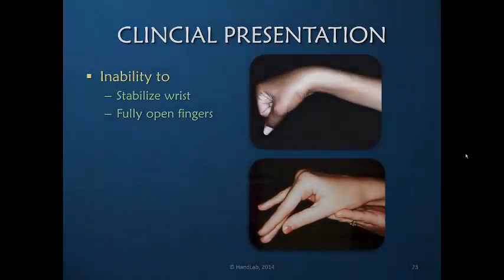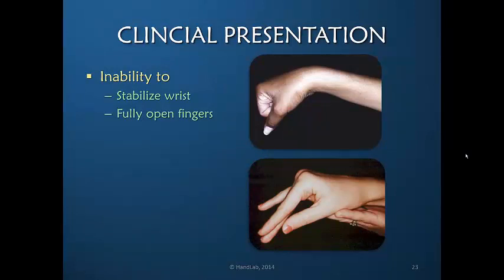The inability to stabilize the wrist means that full finger flexion is not easy to accomplish, because the wrist when maximally flexed creates tension on the extensor system, providing resistance to full finger flexion. However, finger extension at the interphalangeal joints is possible because all of the interosseous and lumbrical muscles are active and are able to extend the fingers at the interphalangeal joints.